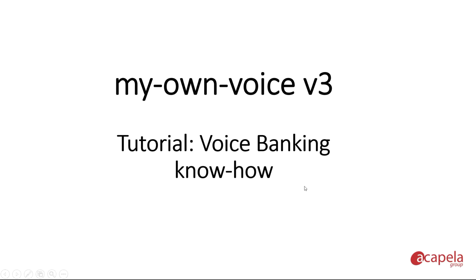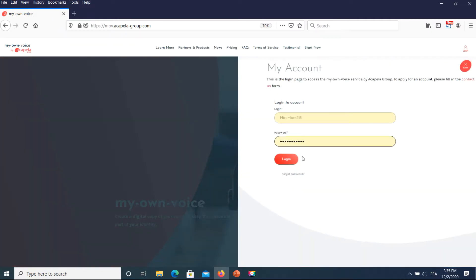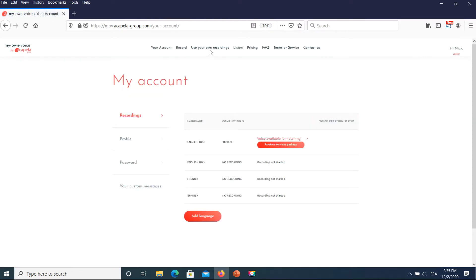Welcome to this tutorial that offers advice on the voice banking process and how to get the most out of it to produce a digital voice. First, you need a My Own Voice account. If you do not have one yet, please refer to the tutorial called 'Start Now.' Go to the My Own Voice website, log in, and go to the Recorder tab section. All you need to start the voice banking process is a computer — Windows or Mac — and an external headset microphone.